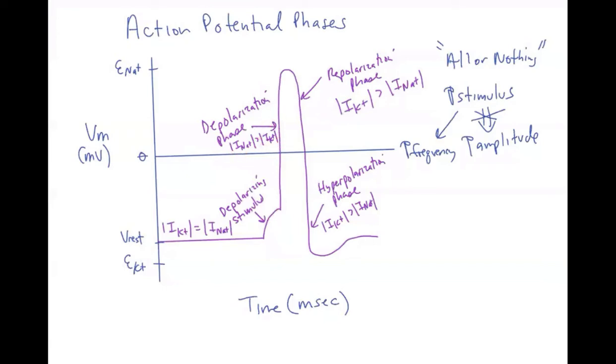Now, remember that the voltage-gated sodium channels inactivate very rapidly. That inactivation gate blocks further entry of sodium. And in addition, as we're depolarizing, we're now getting to the threshold of voltage-gated potassium channels. These are different than the leaky potassium channels.